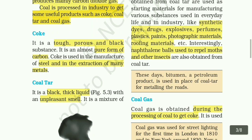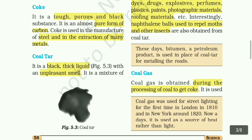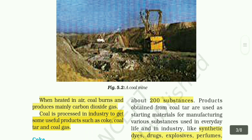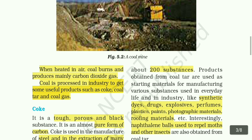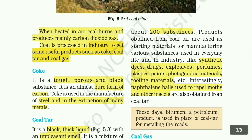Coal tar is a black, thick liquid with an unpleasant smell. It is a mixture of about 200 substances. Products obtained from coal tar are used as starting materials for manufacturing various substances used in everyday life and industry, like synthetic dyes, drugs, explosives, perfumes, plastics, paints, photographic materials, roofing materials, etc. Interestingly, naphthalene balls used to repel moths and other insects are also obtained from coal tar.